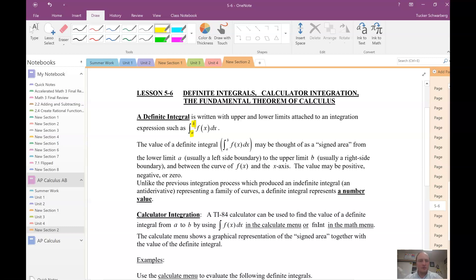The value of the definite integral may be thought of as the signed area from the lower limit, which is represented here as a, to the upper limit, which is b. And it's signed, it can be positive, the area can be negative, or it could be zero.